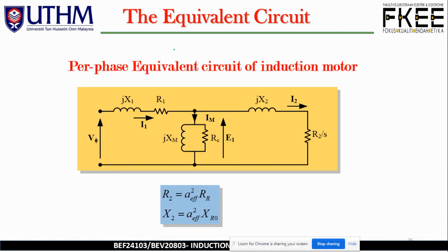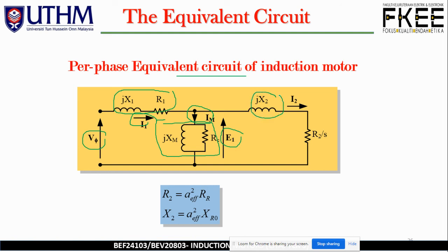Finally, the complete per-phase equivalent circuit of the induction motor has: V-phase feeding R1 and X1 (stator), then the excitation branch with RC and XM in parallel, followed by the referred rotor circuit with X2 and R2/S in series, where R2 = A_eff²·RR and X2 = A_eff²·XRo.